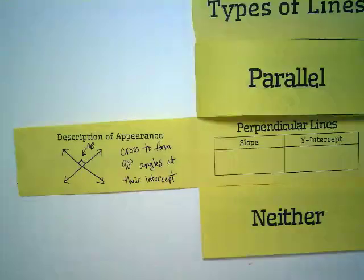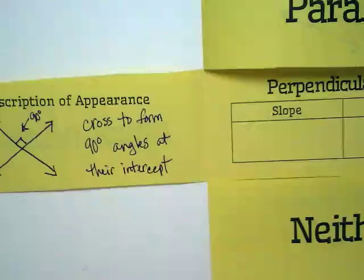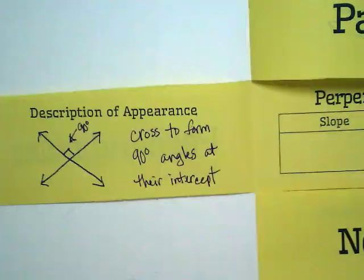And I'm not using that word intercept as like x or y intercept, but where the two lines intercept wherever that is on the graph. It's where they cross.